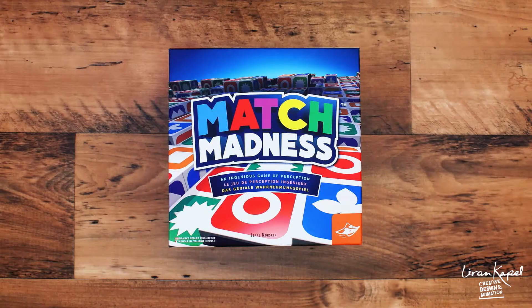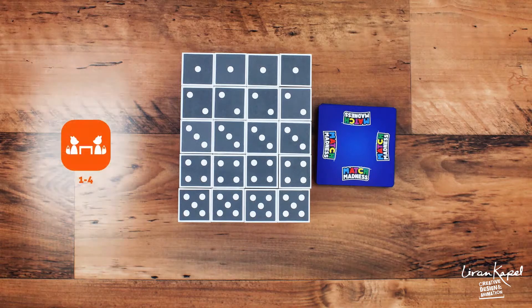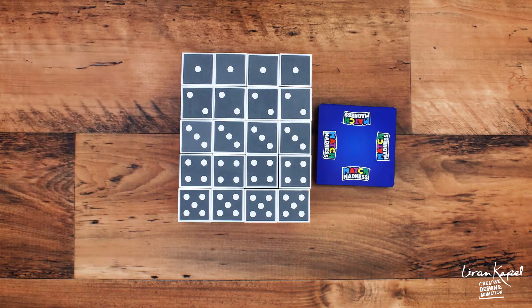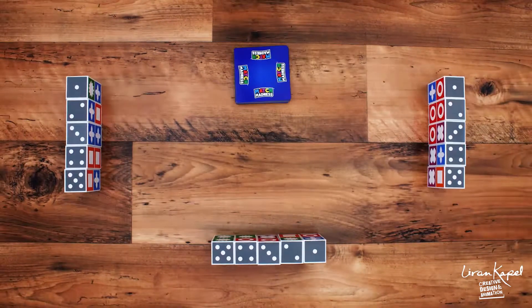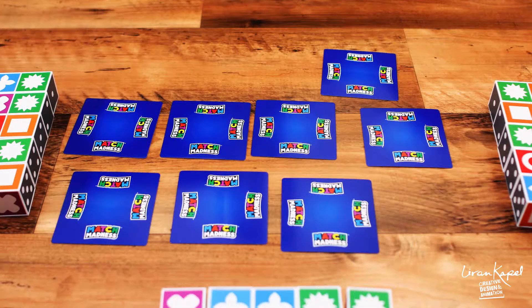This is Match Madness, the fast and ingenious game of perception for one to four players. Each player gets an identical set of five blocks. Shuffle the pattern cards, decide on the number of cards you will play for, and flip the top card over to start.